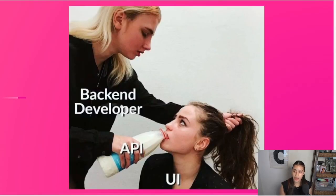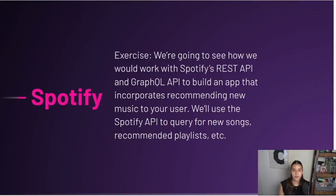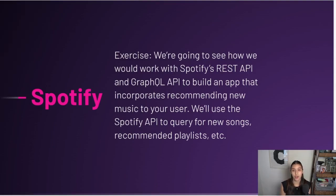Another picture I think really helped me understand — I actually saw it floating around on Twitter — is this: a backend developer creates an API and feeds it to the UI with the information that it needs. In this video we're going to look at what it would be like to use Spotify's REST API and Spotify's GraphQL API. We'll see the differences and talk about some of the downfalls of REST APIs and how GraphQL solves some of these problems for developers.